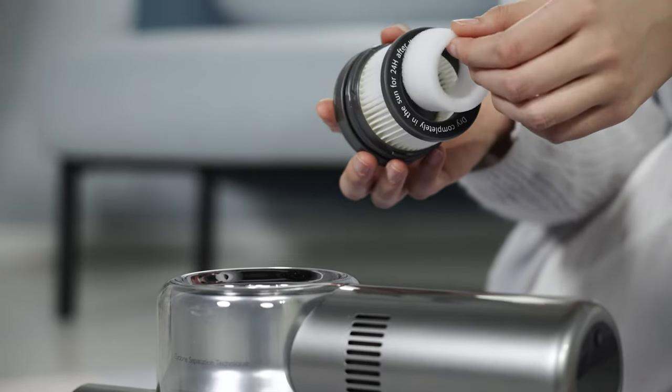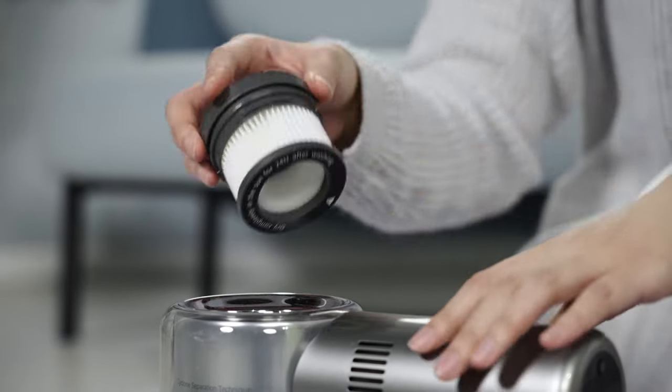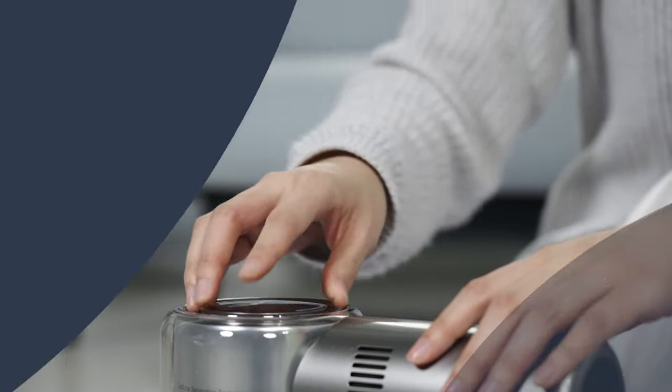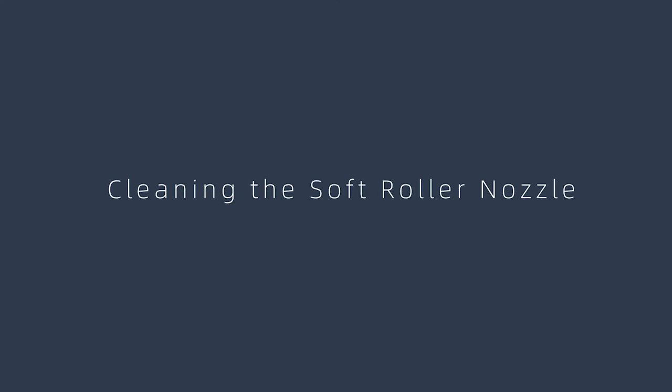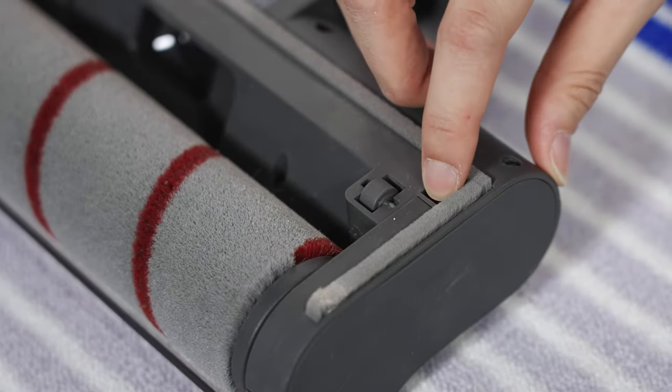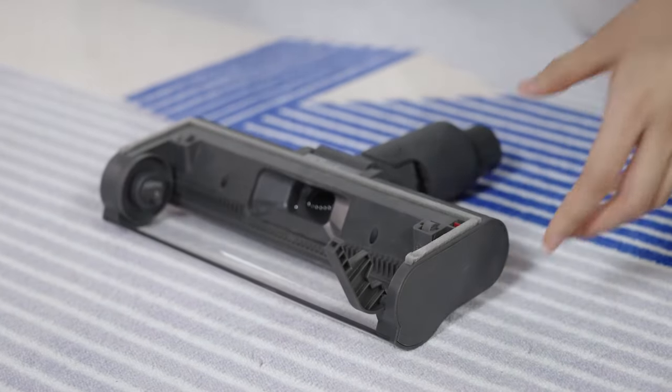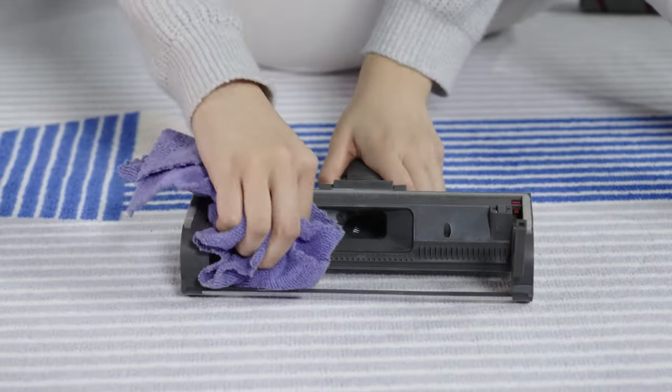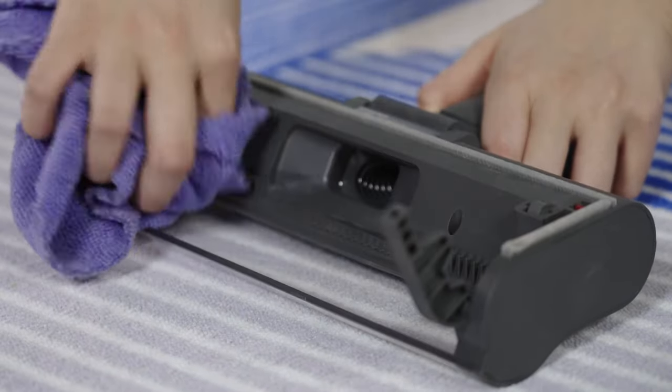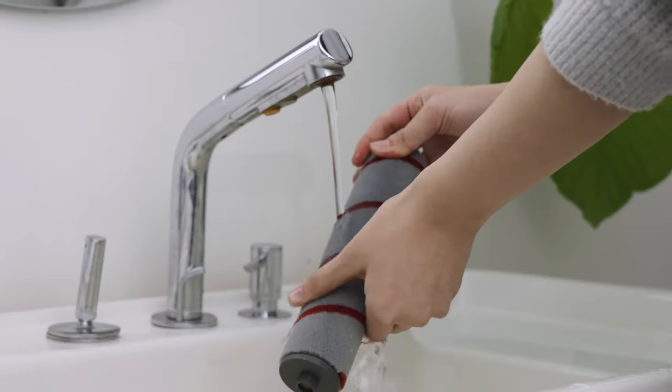Turn the lock counterclockwise until it stops, then remove the roller brush from the brush bar. Wipe the dust from the notch and transparent cover with a dry cloth or paper towel. Thoroughly dry before use.